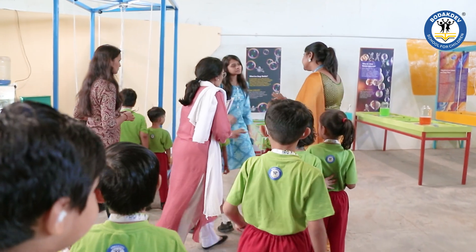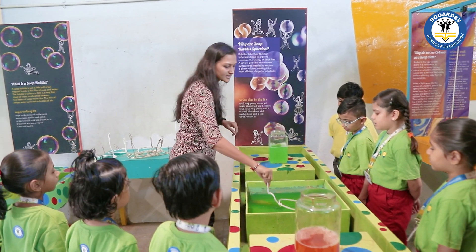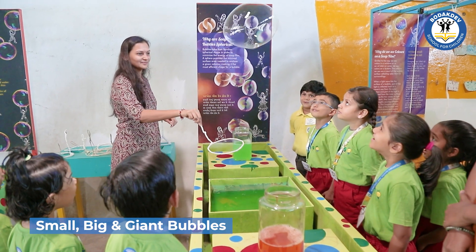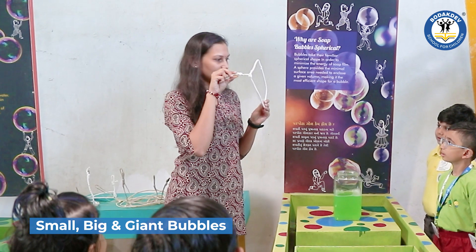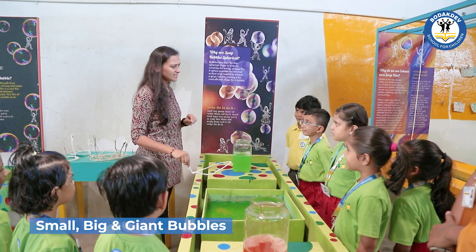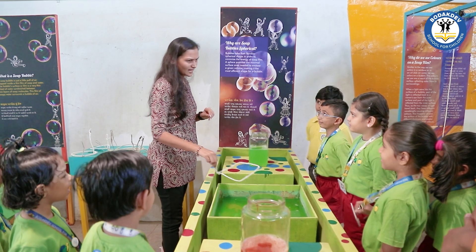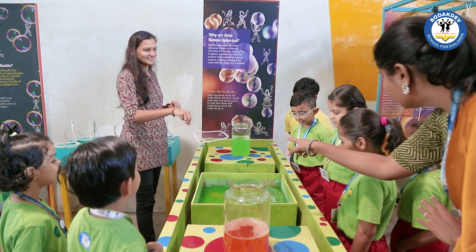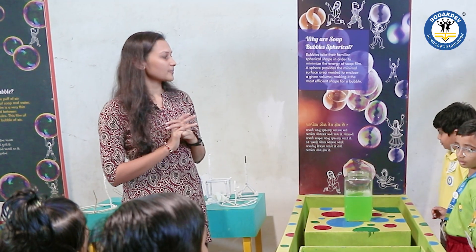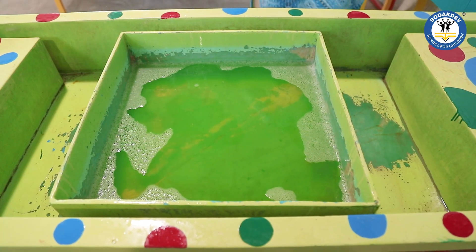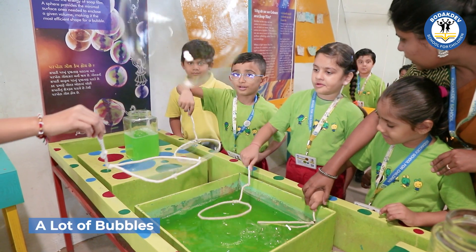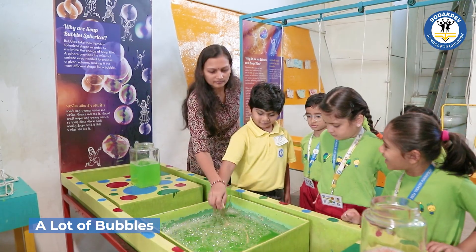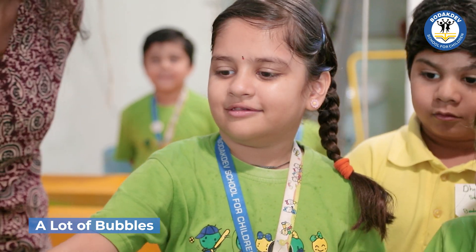Do you want to make a bubble? Yes. Circle. When we remove the bubbles, how will it be? This is a square. How will it be — square? No, is it square? No.